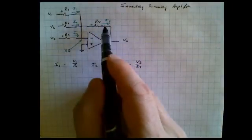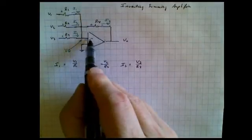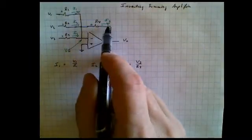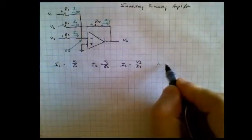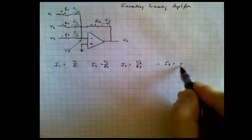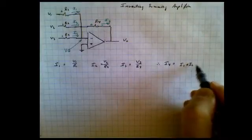And then, of course, we just finished stating that since these currents do not go into the input of the op-amp, it's high impedance, they must go this direction through R4. And so therefore, I4 is equal to I1 plus I2 plus I3.